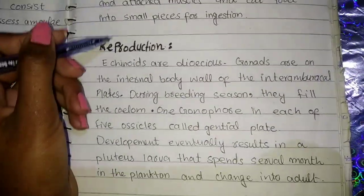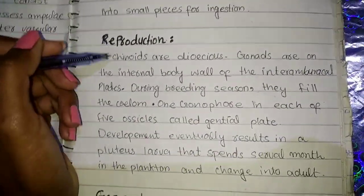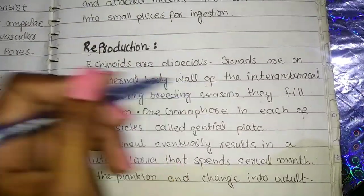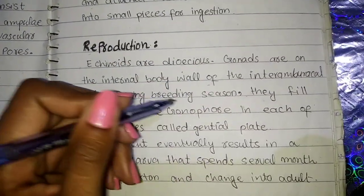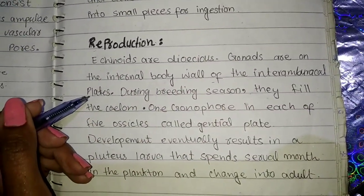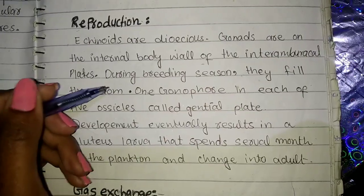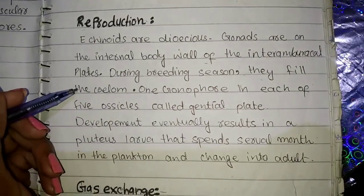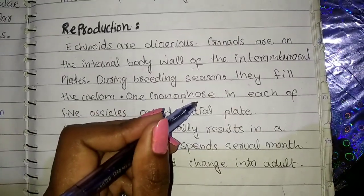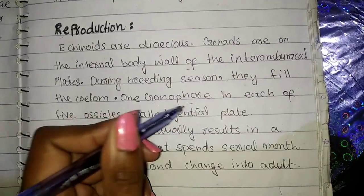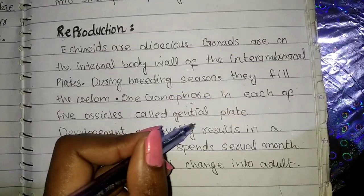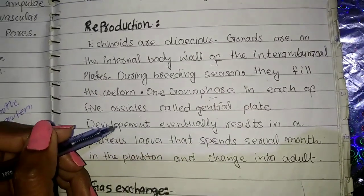The last topic is reproduction. Echinoderms are dioecious. The gonads are on the internal body wall of the inter-ambulacral plates. During breeding season, they fill the coelom. There is one gonopore opening in each of five genital plates for releasing gametes.